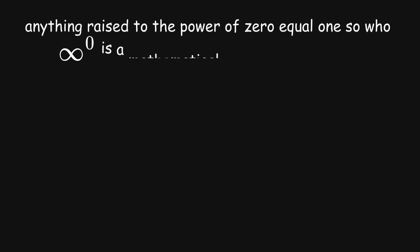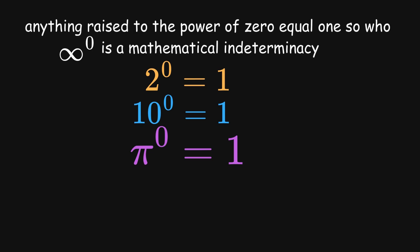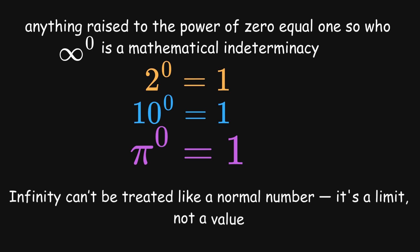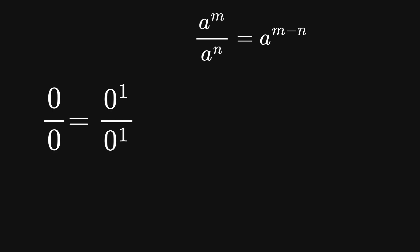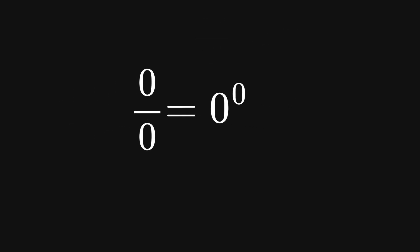Now you might be thinking: doesn't anything raised to the power of 0 equal 1? And you'd be right — for regular numbers. But infinity isn't a regular number; it's a concept that breaks the usual rules. Similarly, recall 0 divided by 0: we can write it as 0 raised to the first power divided by 0 raised to the first power. Subtracting exponents gives 0 raised to the power of 1 minus 1, which is 0 raised to the power of 0. So 0 divided by 0 equals 0 to the power of 0 — and since 0 divided by 0 is an indeterminacy, 0 raised to the power of 0 is also a mathematical indeterminacy.